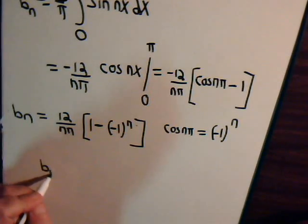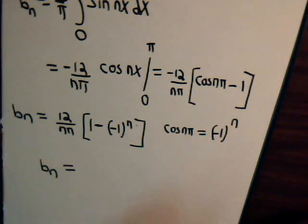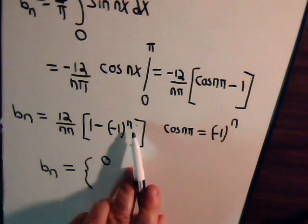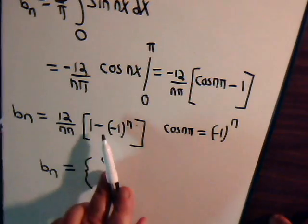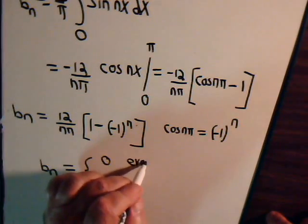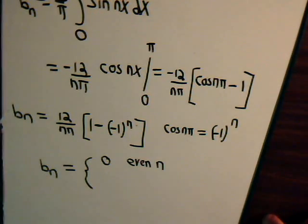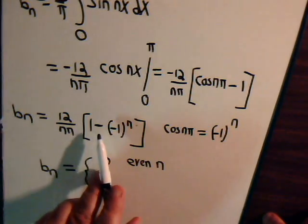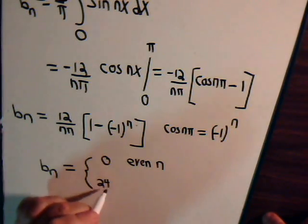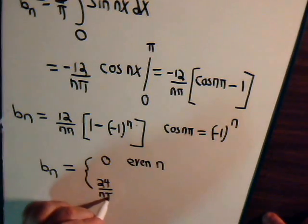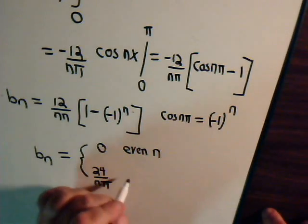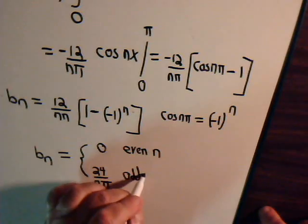So, now we can say that b sub n, and that's the only Fourier coefficient term that we have, that's going to equal zero when n is an even number, because then we have one minus one. So, that's zero for even n. And when n is odd, this is negative one, we'll have one minus negative one, that's two, times twelve. That's twenty-four over n times π. And that is for odd n.